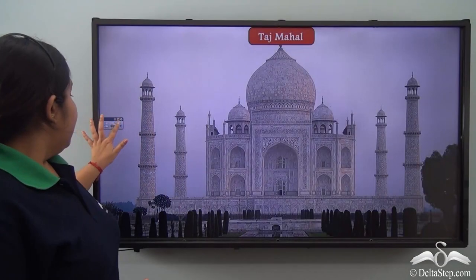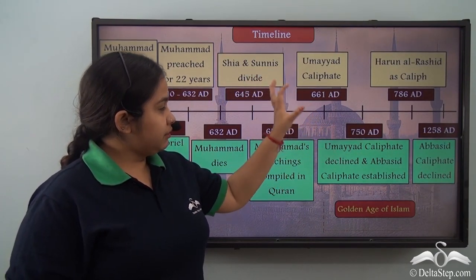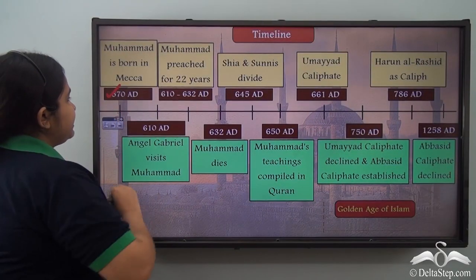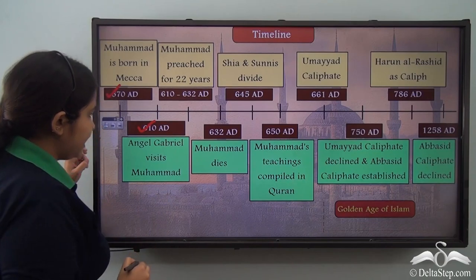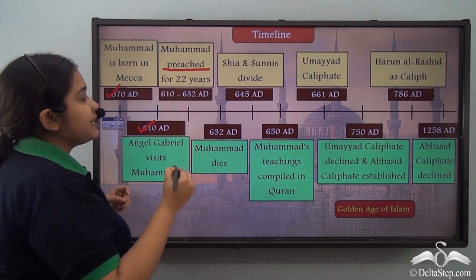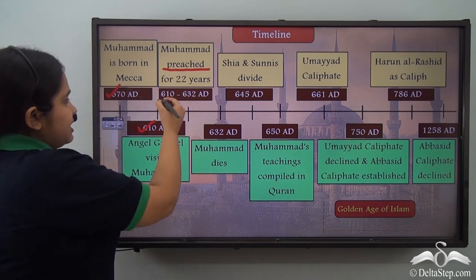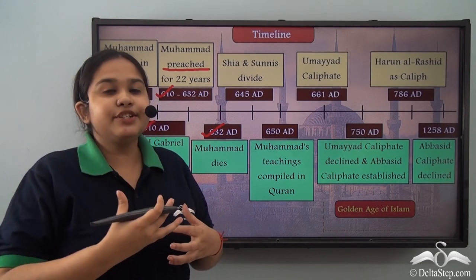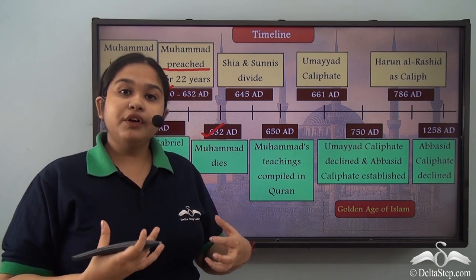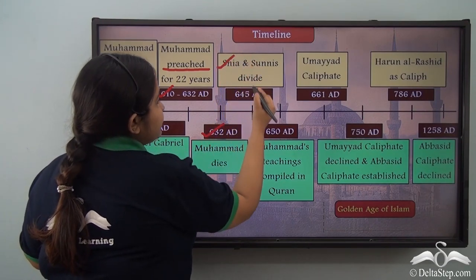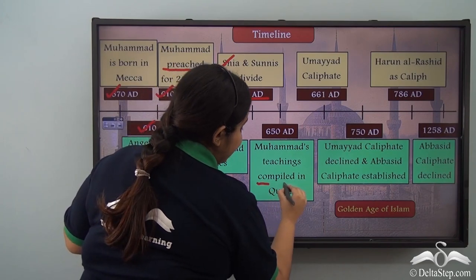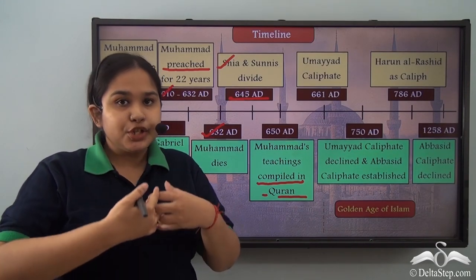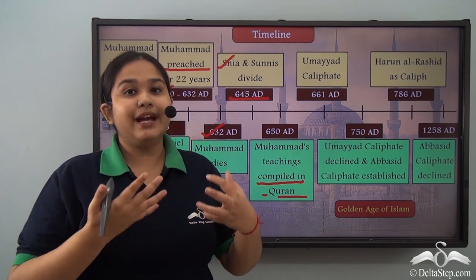Now if we look at the timeline on the screen right now, we see events such as Mohammed's birth in 570 AD, his revelation in 610 AD, and his political and religious preachings from 610 to 632 AD until Mohammed dies. Then we see the divide of the Shias and Sunnis in 645 AD and the compilation of the Quran — events that marked the institutionalizing of Islam.